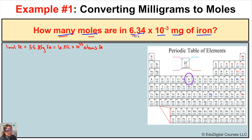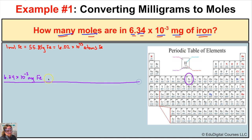So the problem says: how many moles are in 6.34 times 10 to the negative third milligrams of iron? We are starting with 6.34 times 10 to the negative third milligrams of iron and we want to figure out how many moles this represents. The given quantity is in milligrams, but the molar mass on the periodic table is in grams per mole, so we're going to have to convert milligrams to grams first.